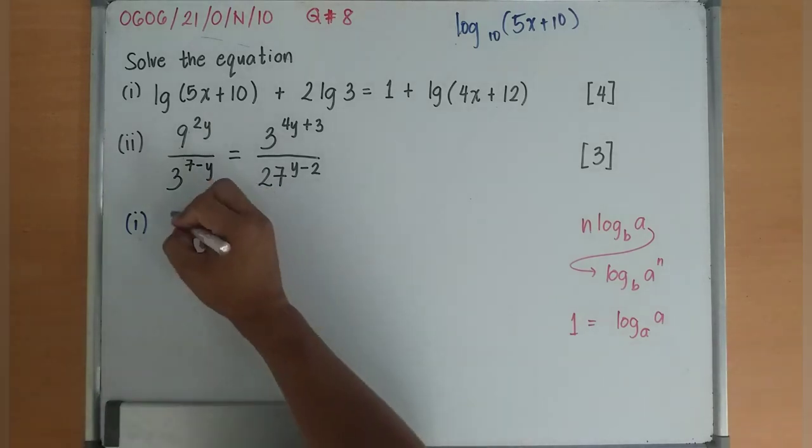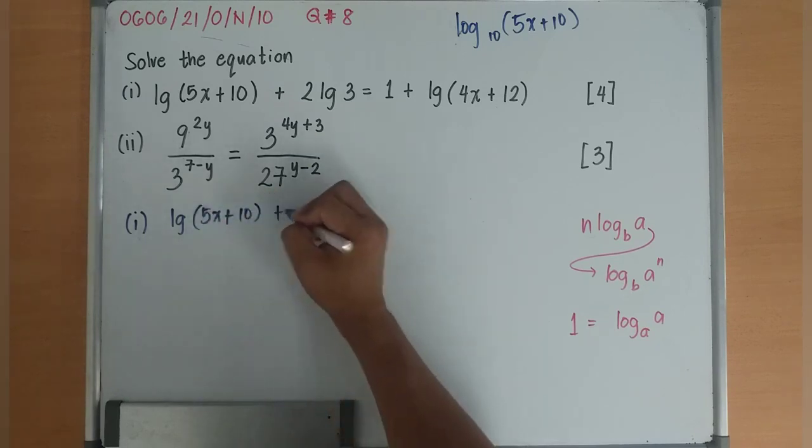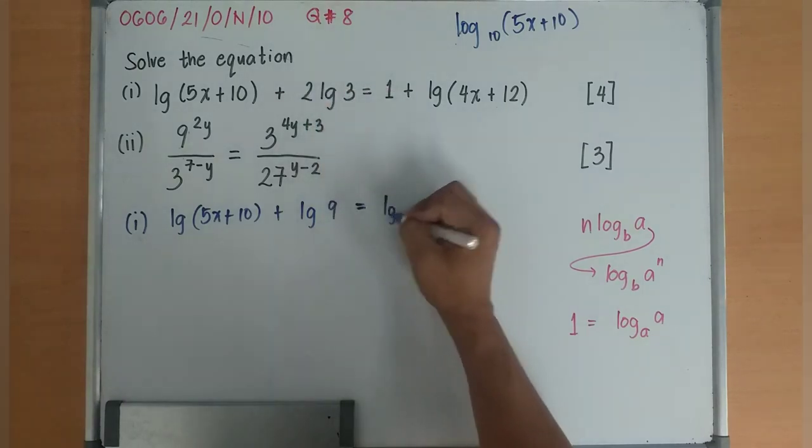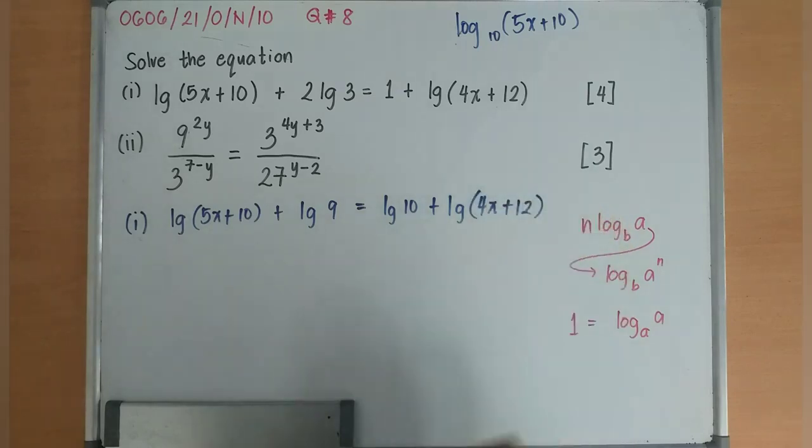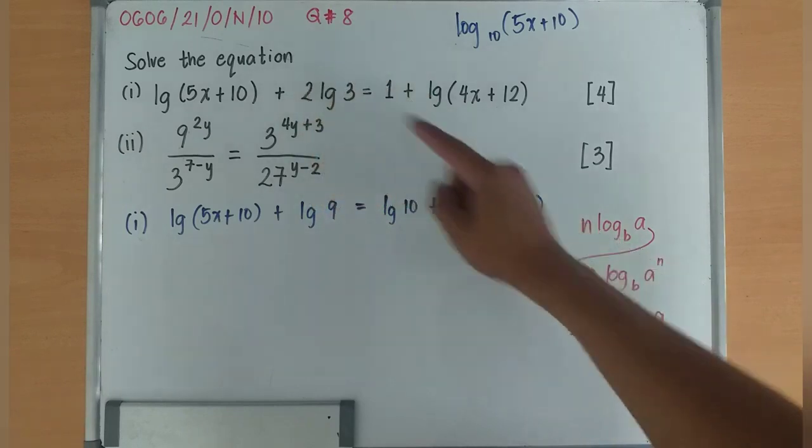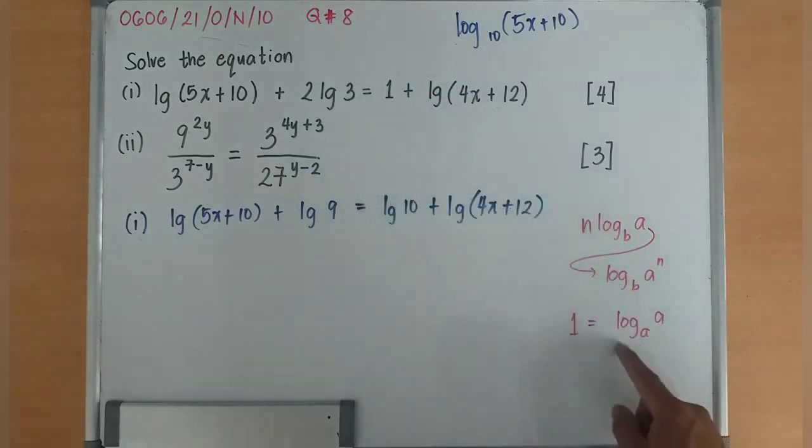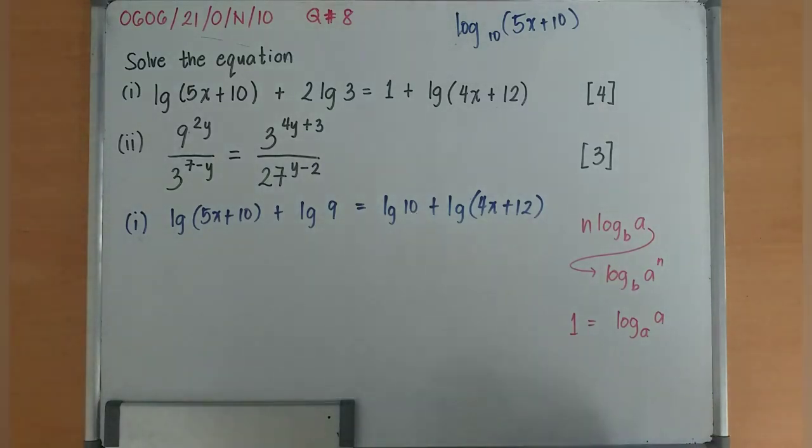Let's apply that. It will become LG of 5x plus 10 plus LG of 3 squared, which is 9, is equal now to LG 10 plus LG of 4x plus 12. The 2 becomes an index of the logarithm, which is 3 squared equals 9. Then 1 is LG A in the base A, so it's LG 10.